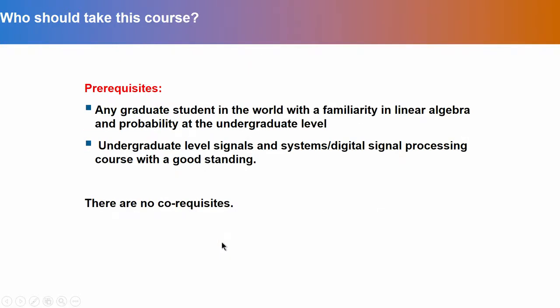Well, who should take this course? There are prerequisites for this course. Any graduate student in the world with a familiarity in linear algebra and probability at the undergraduate level can take this course. Also, it is preferred to have undergraduate level signals and systems or digital signal processing course to be taken by a student with a good standing. These are the prerequisites and if you do not meet the prerequisites, you may have to consult the instructor and there are no corequisites for this course.